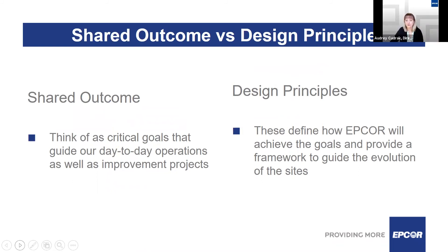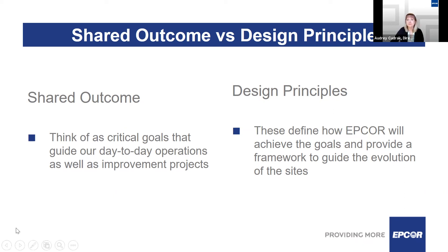As you mentioned, Kim, we've been talking to those around the Rossdale and E.L. Smith sites since late 2020 to understand how we can operate and upgrade the plants moving forward. It's important to us that we do work at the sites in an environmentally and socially responsible manner that aligns with the community interests. We, in collaboration with the participants, have built a series of design principles for the Rossdale and E.L. Smith sites. These will define how we'll meet the goals. You can find more information about the design principles for each of the shared outcomes in the other videos.